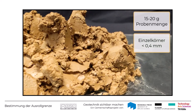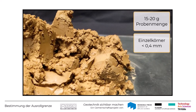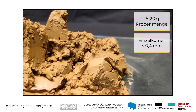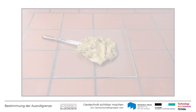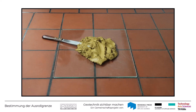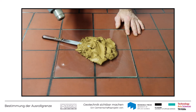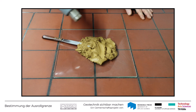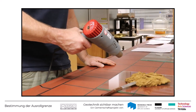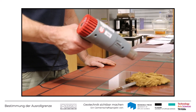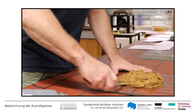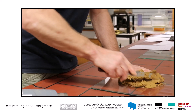Falls erforderlich, müssen gröbere Bestandteile zunächst entfernt werden. Dann wird die Probe auf der Glasplatte angetrocknet, bis sie so plastisch ist, dass man eine Kugel daraus formen kann. Gegebenenfalls kann die Probe dabei unter einem sanften Strom von warmer Luft getrocknet werden.